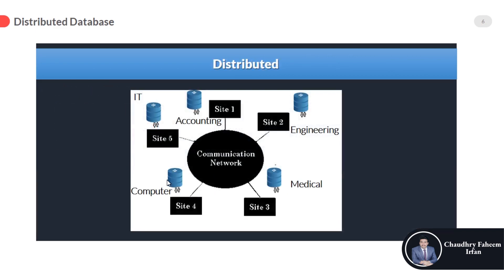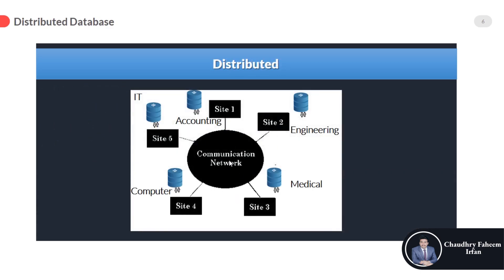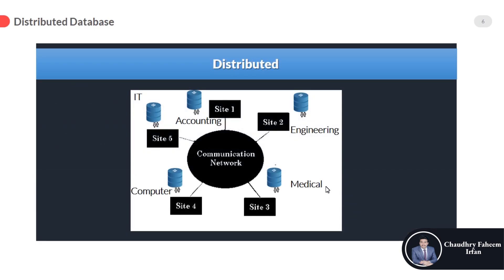Lower communication cost means that if you want to access computer department data and you are at Site 4, there is no need to use the communication network — you can access data directly from Site 4 without using the network. It is also easy to manage and expandable. You can add or remove a department, such as the medical department, from the communication network. All the databases are not physically connected, but logically connected. From the user's point of view, there is only a single database working in the background, but in reality there may be more than two fragments of the database available.